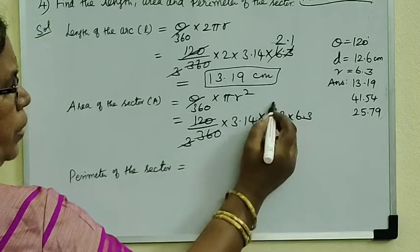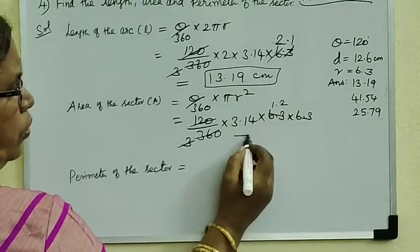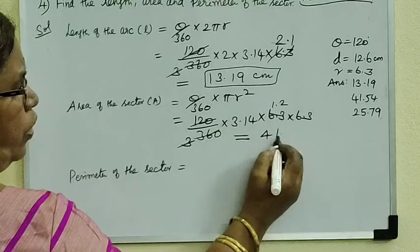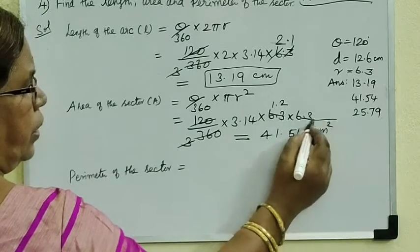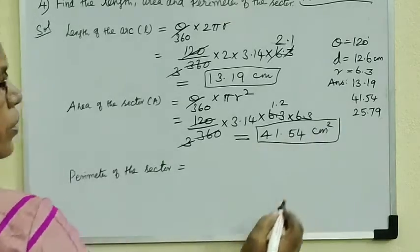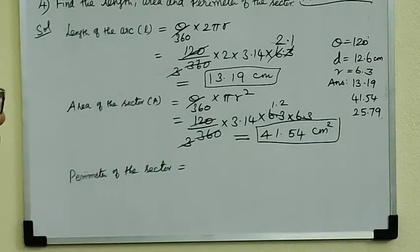If you cancel it, it is 1.2. So we multiply the total: 41.54 cm squared. So the answer is 41.54 cm squared.